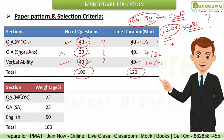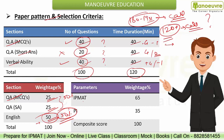The Quant weightage of MCQs is 25%, short answer based is 25%, and English is 50%. So overall, Quant weightage is 50% and English is 50% weightage. You can maximize your score through the English section. The selection criteria parameters: IPMAT aptitude test is 65% weightage, personal interview is 35%. The composite score is out of 100, and there is no VAT this time.